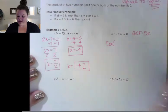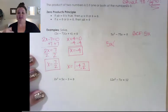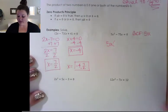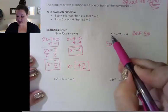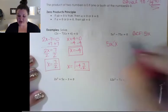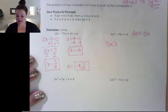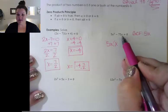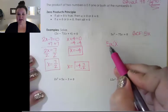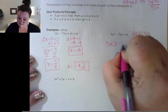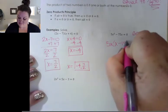I'm going to take 5x and take that out of each term by dividing it off. So 5x squared divided by 5x leaves me with a single x. Negative 75x divided by 5x leaves me with just a negative 15.